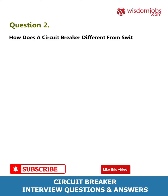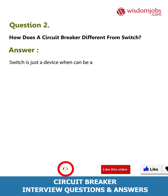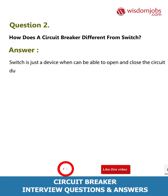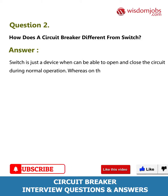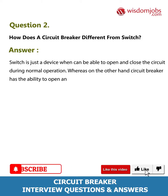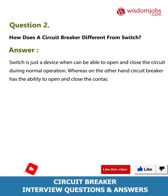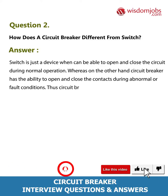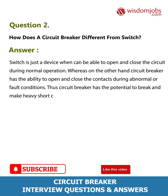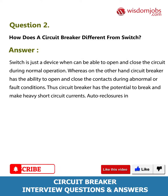Question 2: How does a circuit breaker differ from a switch? Answer: A switch is just a device that can open and close the circuit during normal operation, whereas a circuit breaker has the ability to open and close the contacts during abnormal or fault conditions. The circuit breaker has the potential to break and make heavy short circuit currents.